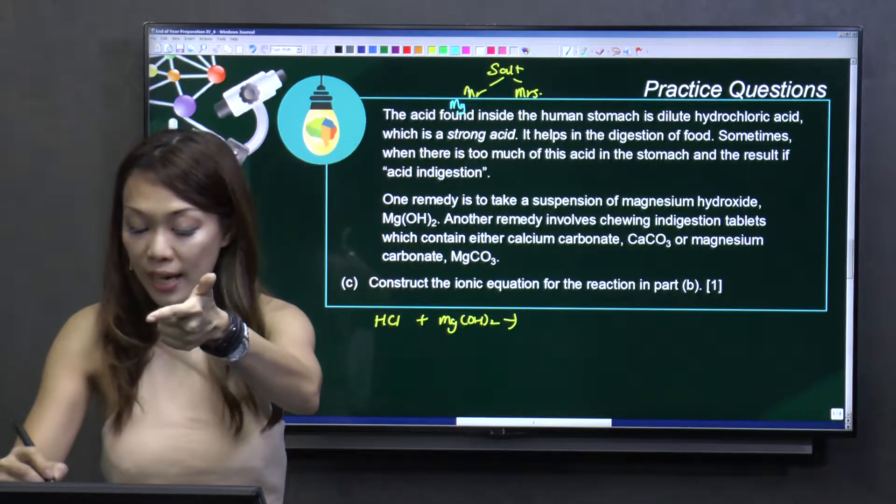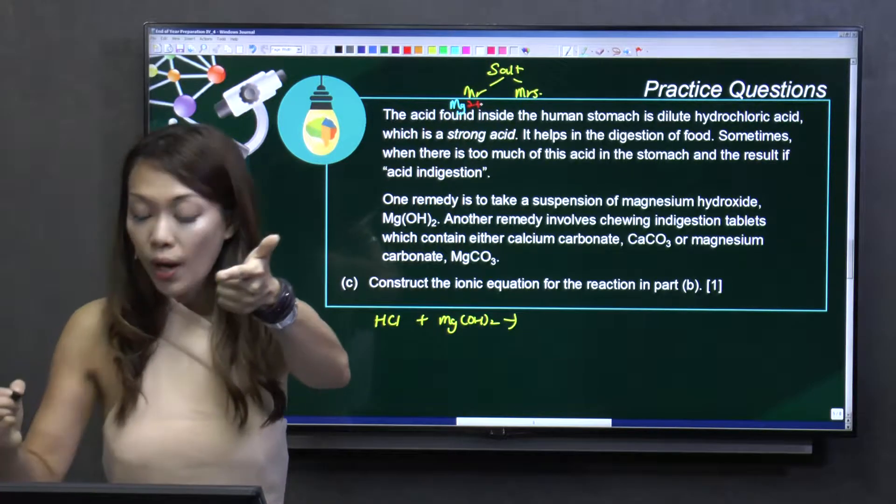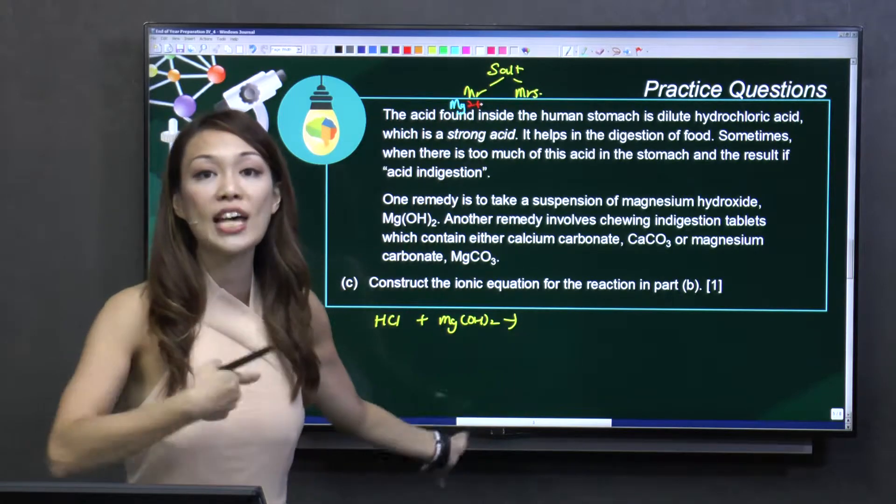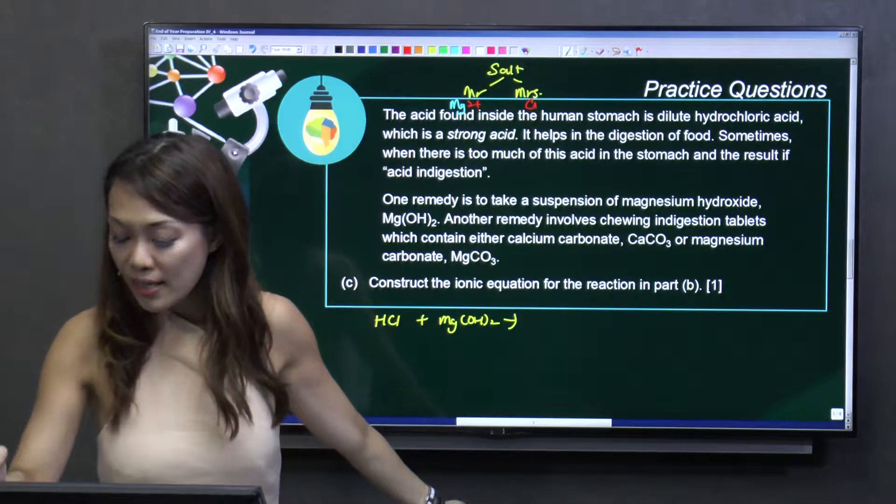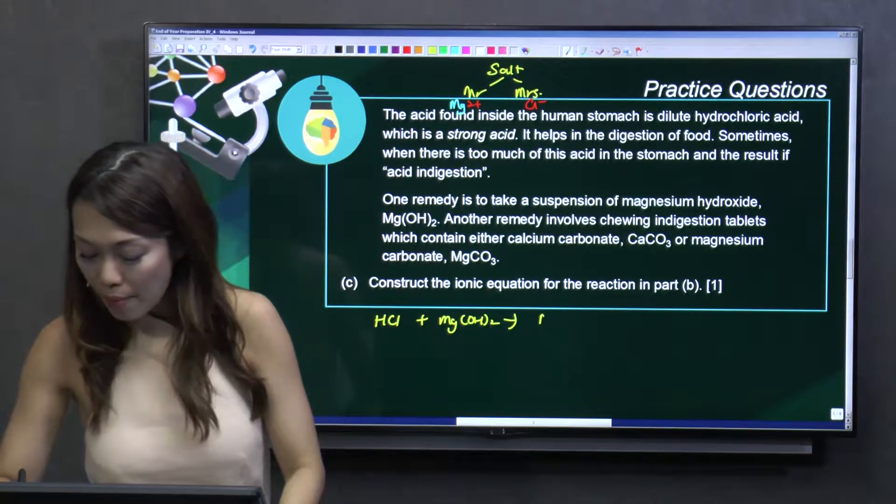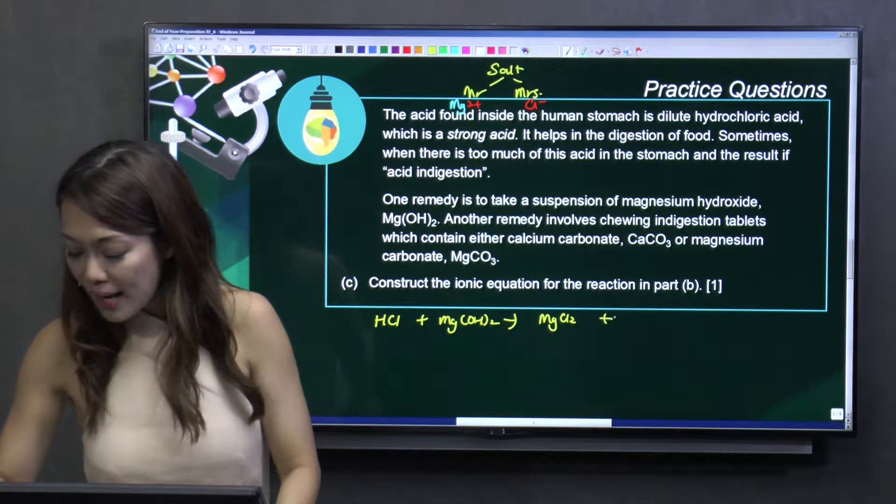What charge? Periodic table? Come, quickly tell me. Yes, 2+. I heard you. And missus comes from your acid. Which acid am I using here? Hydrochloric, so it should be what? Chloride Cl-. Combine and you will get MgCl2 plus H2O.